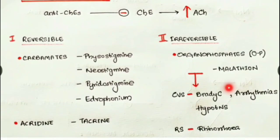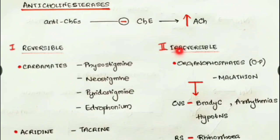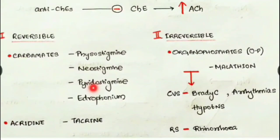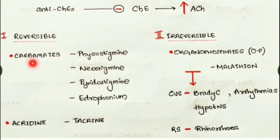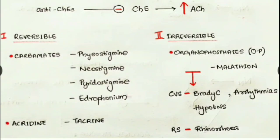There are two types of anticholinesterases: reversible and irreversible. The reversible type reversibly inhibits the cholinesterase enzyme. The first group are the carbamates: examples are physostigmine, neostigmine, pyridostigmine, and edrophonium. The other group is the acridines, with tacrine being the example.